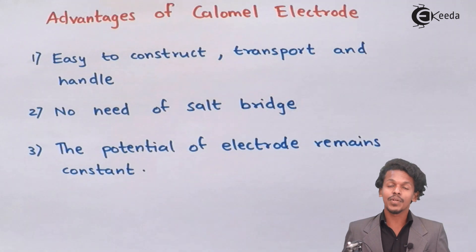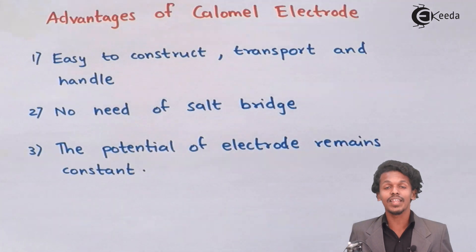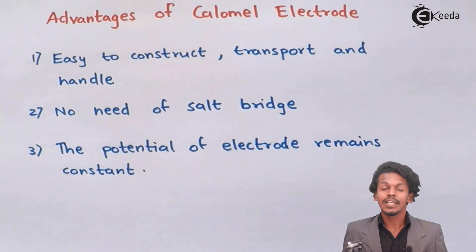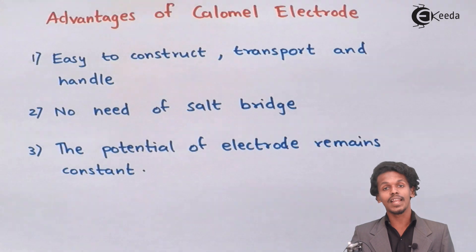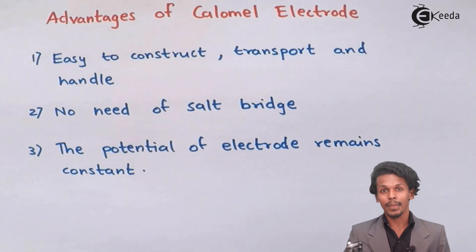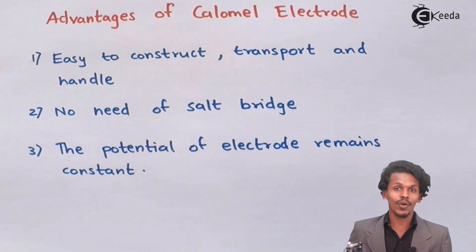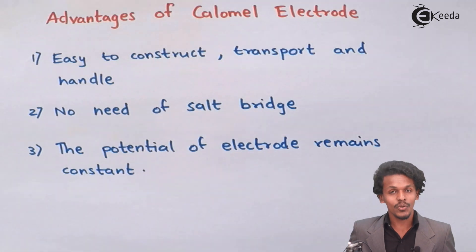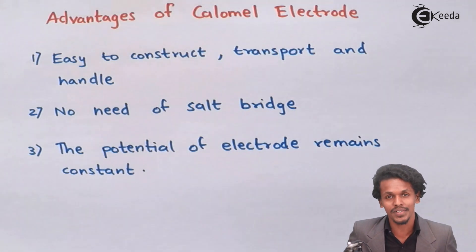The calomel electrode plays a very important role as a secondary reference electrode in determining cell potential and the electrode potential of other electrodes. Thank you friends for watching this video. I hope you have got a clear idea of the SHE as well as the calomel electrode. Please share this video with your friends and don't forget to subscribe to the channel. Thank you so much.